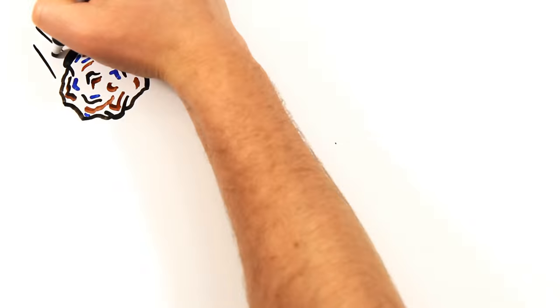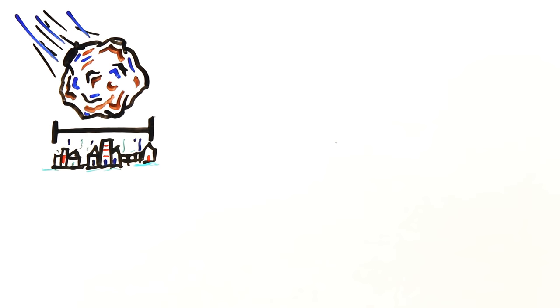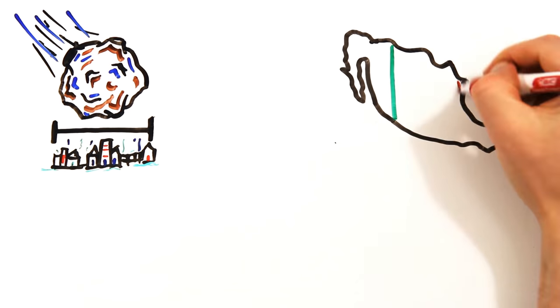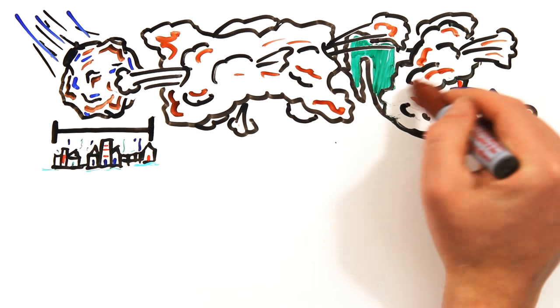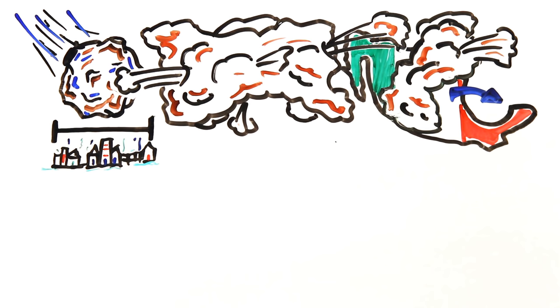Many scientists believe that the extinction of dinosaurs was caused by an asteroid the size of a small town crashing into what is now Mexico's Yucatan Peninsula. The impact shot millions of tons of dust into the atmosphere, blocking out sunlight and spelling an end to all large dinosaurs. The small ones that survived evolved into birds.